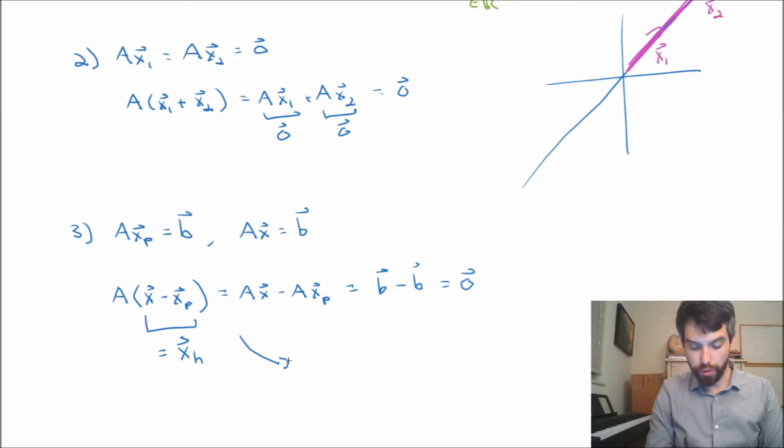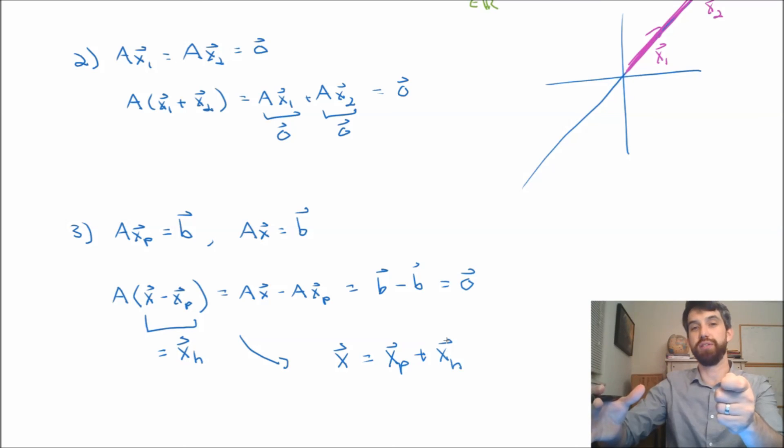And if I take that whole scenario and rearrange it, I can say something like this. My solution x is a particular solution plus a homogeneous solution. So my big takeaway here is that every solution to Ax = b can be written as the sum of two things. One, a solution to the homogeneous, and the other, just one particular specified solution to Ax = b. In effect, if you know one solution to Ax = b, it's kind of good enough. Because all of the other solutions to Ax = b are that one that you've chosen plus various homogeneous solutions.